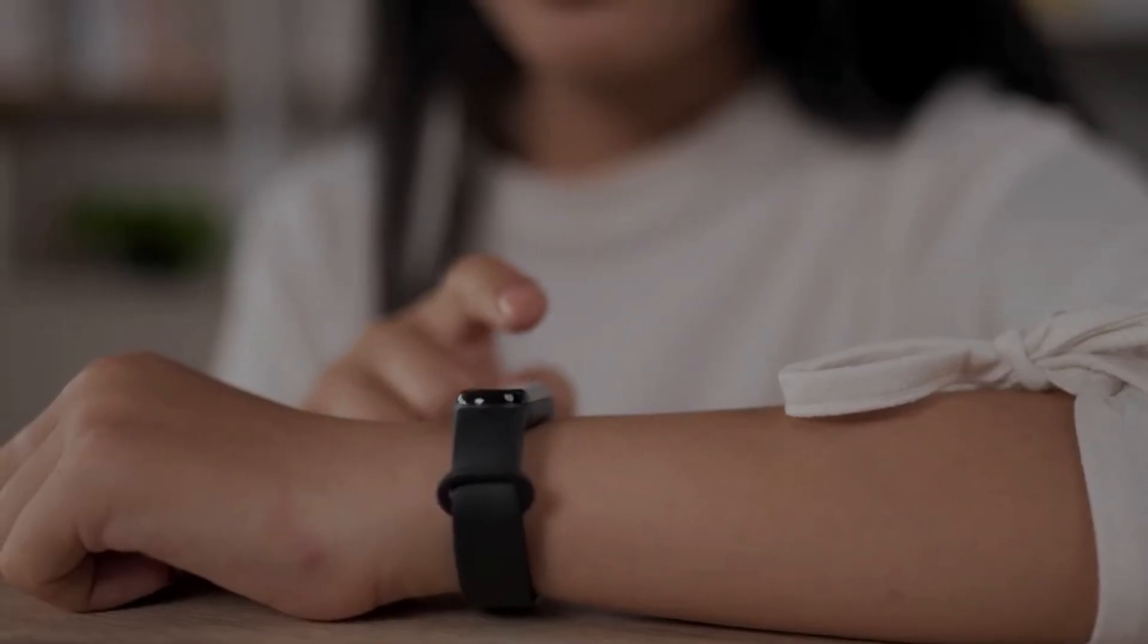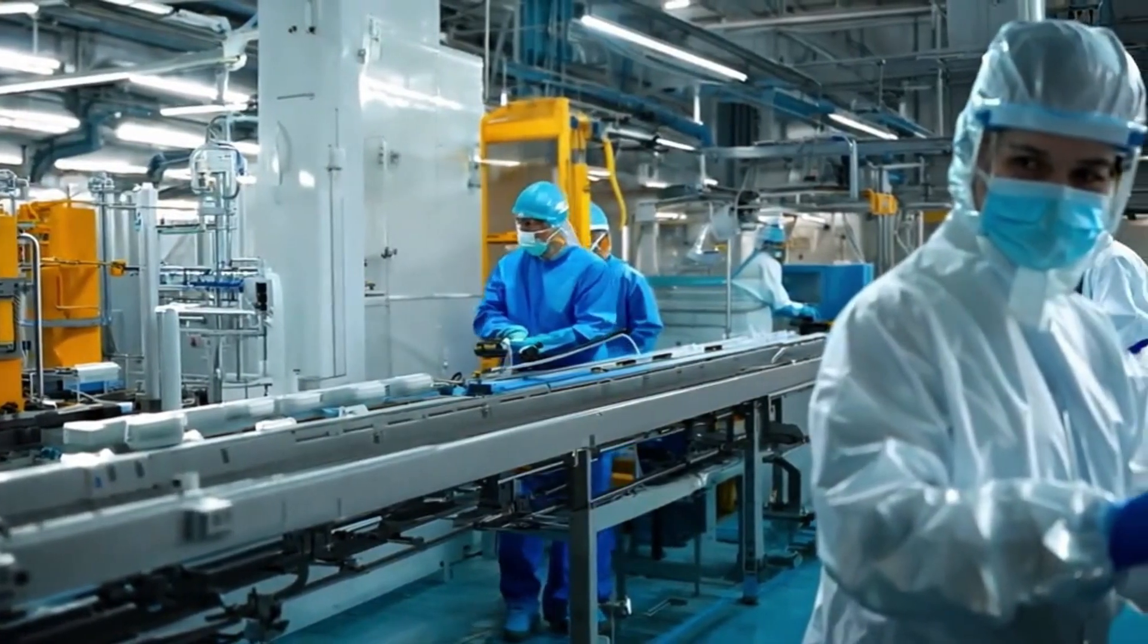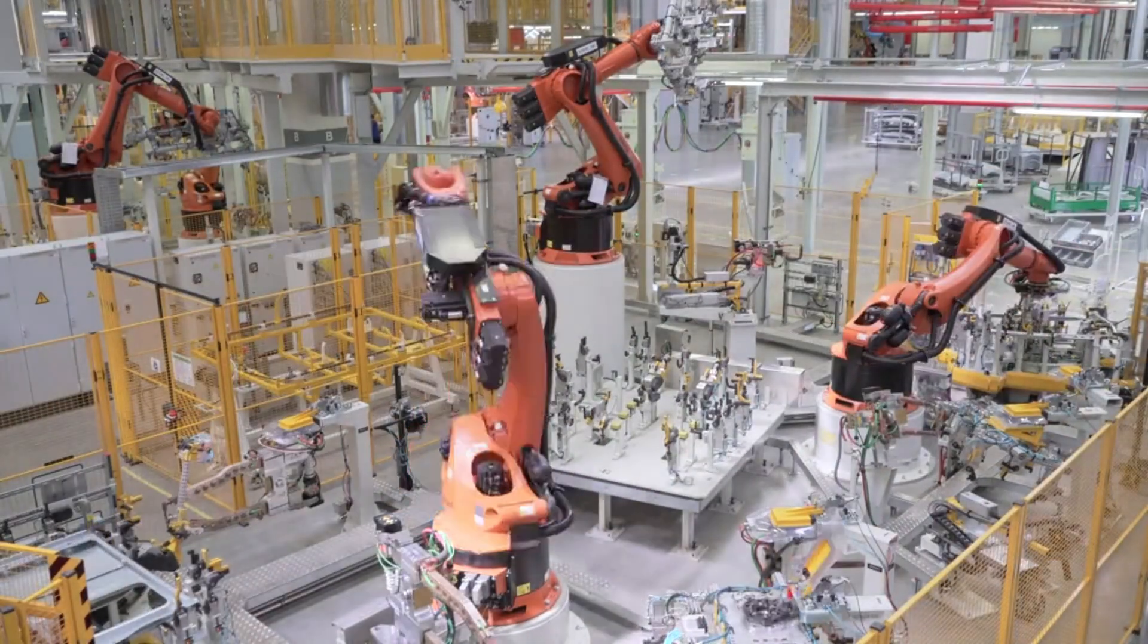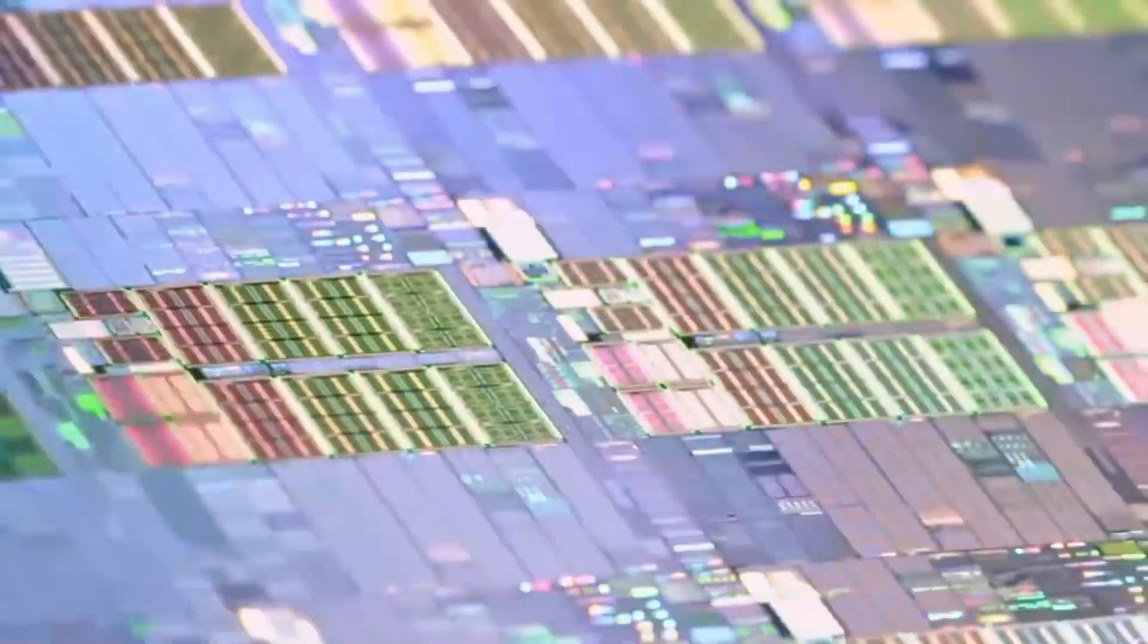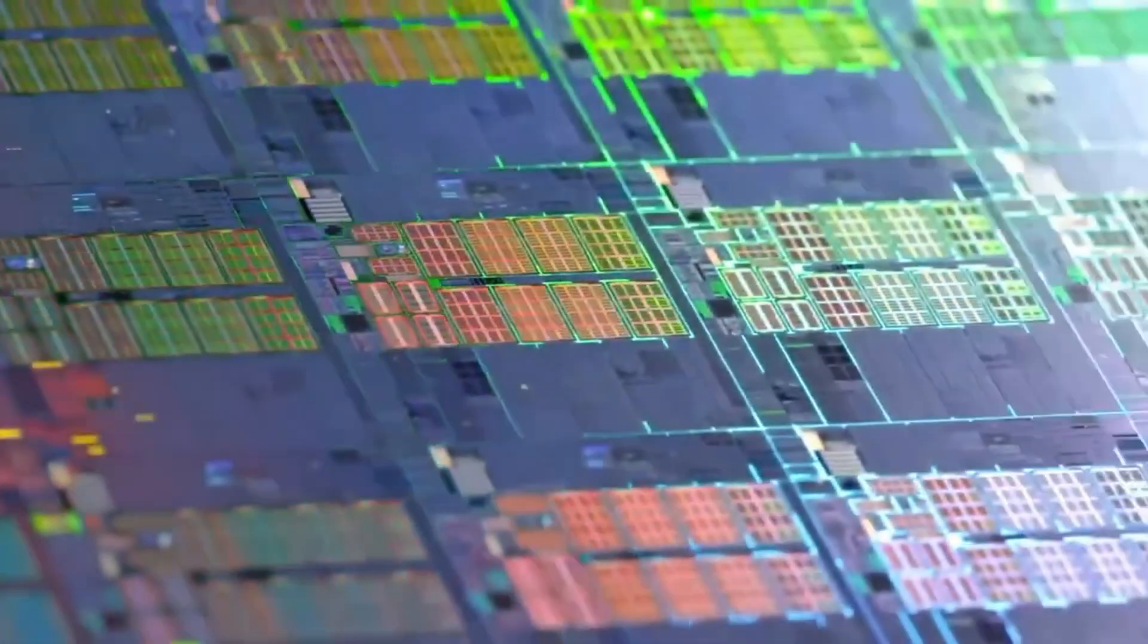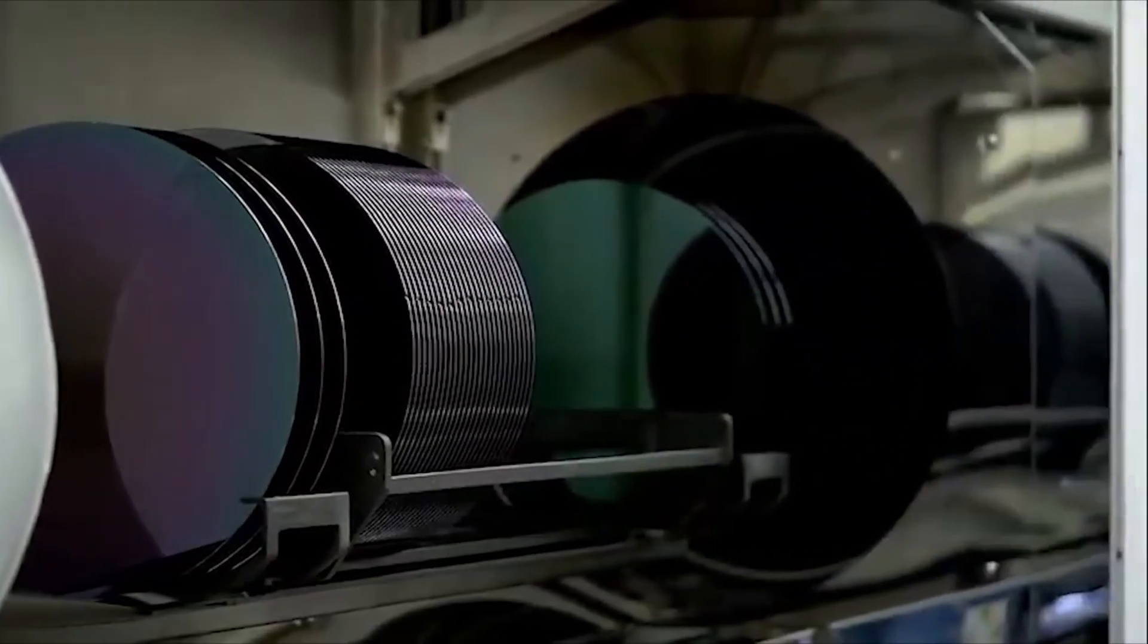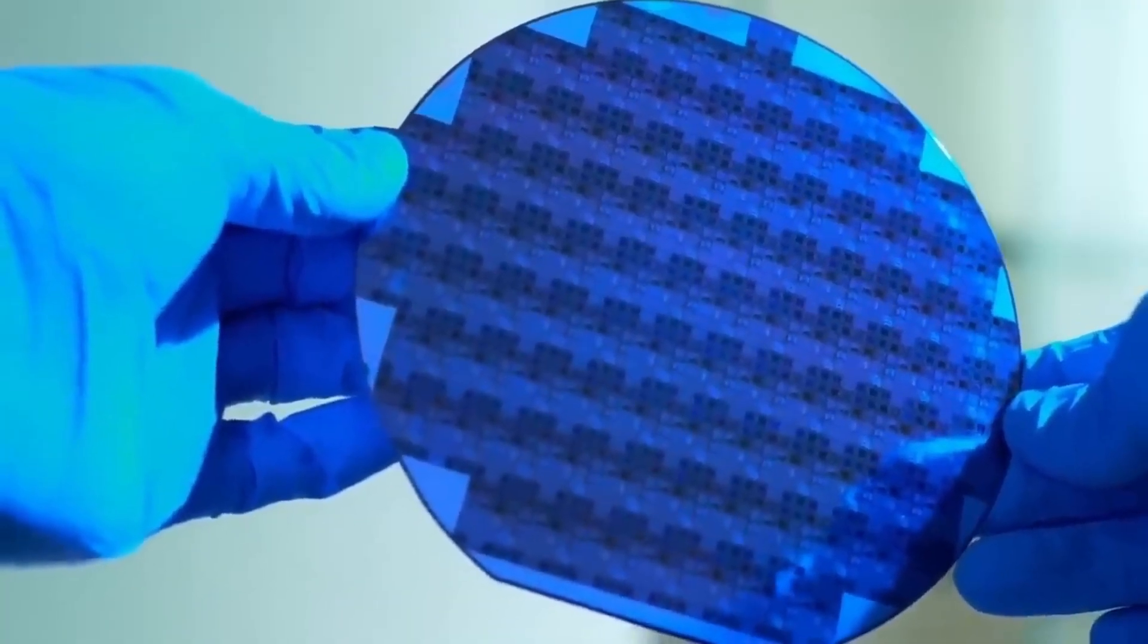In a modern semiconductor factory, billions of microchips are produced every year. Each one is the result of engineering so advanced and precise that it seems like science fiction. Structures invisible to the human eye, organized with atomic precision, capable of moving and processing data at incredible speeds. But what is the process inside a microchip factory? It all starts with something you might find on a beach. Sand.